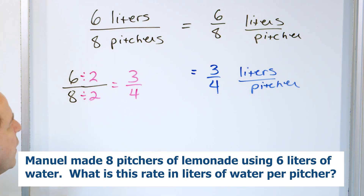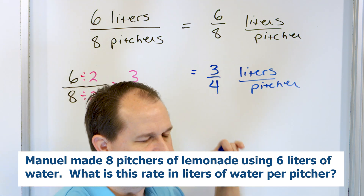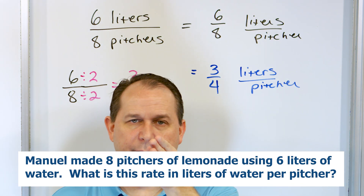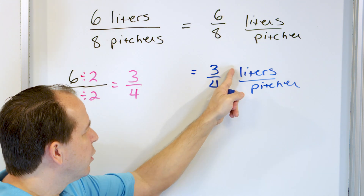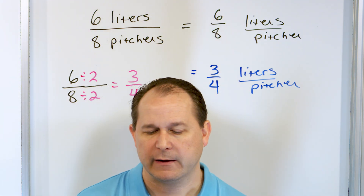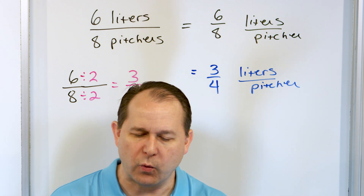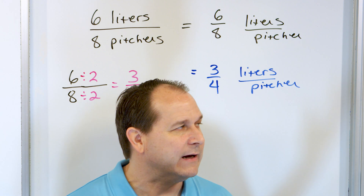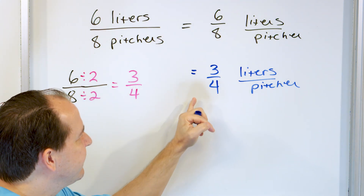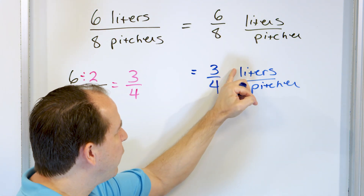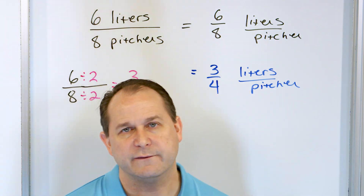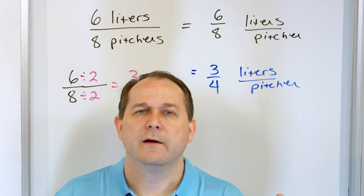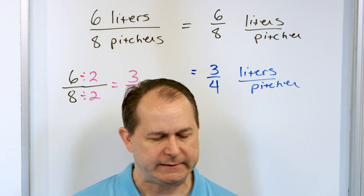What does this mean? Well, think about it — if instead of three-fourths the answer came out to be one, then it would mean one liter of water was required to make one pitcher of lemonade. But that's not what we got. We got three-fourths. So what it's telling us is it takes three-fourths of a liter of water to make a pitcher of lemonade. Three-fourths of a liter means a little bit less than a liter of water to make a pitcher of lemonade. And that's the final answer.